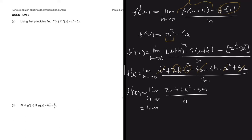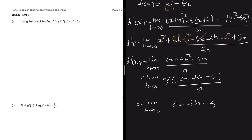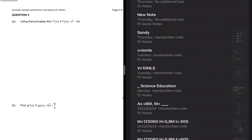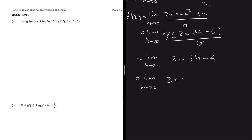If we take h as a common factor on the numerator, we get the limit as h approaching 0 of h times (2x plus h minus 5x), divided by h. The h and h cancel out, so we're just left with the limit as h approaching 0 of 2x plus h minus 5. As h approaches 0, we get 2x minus 5.